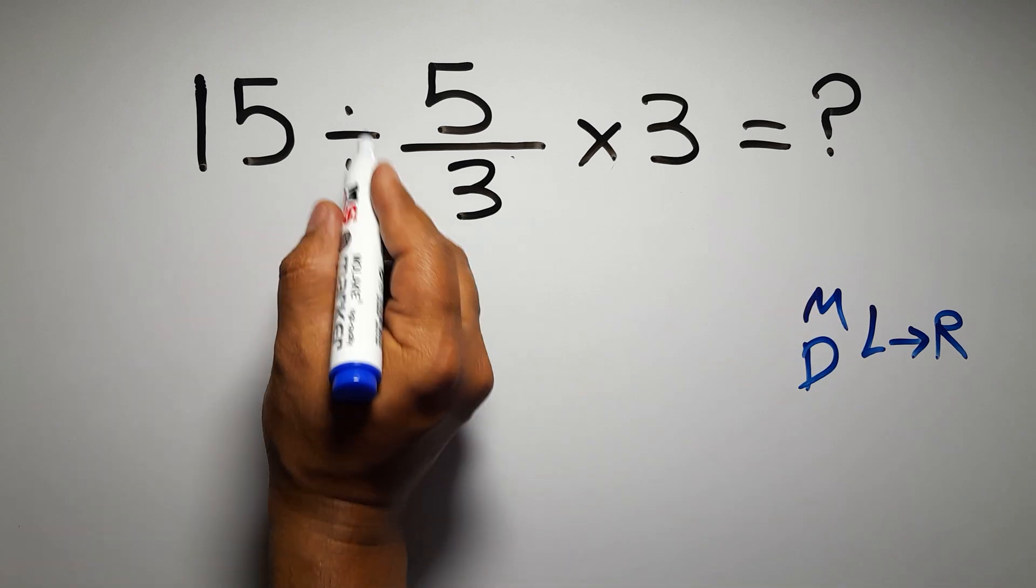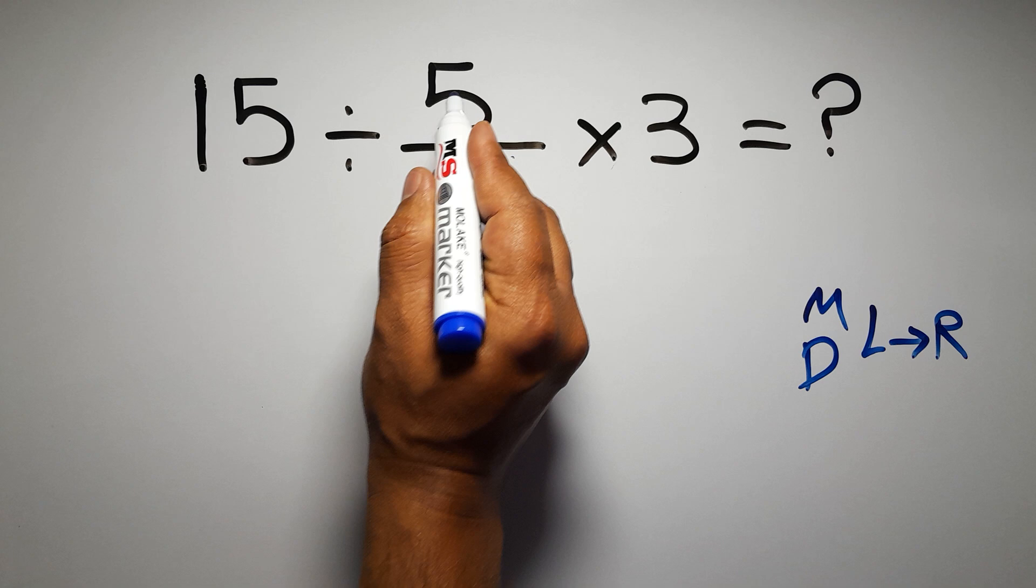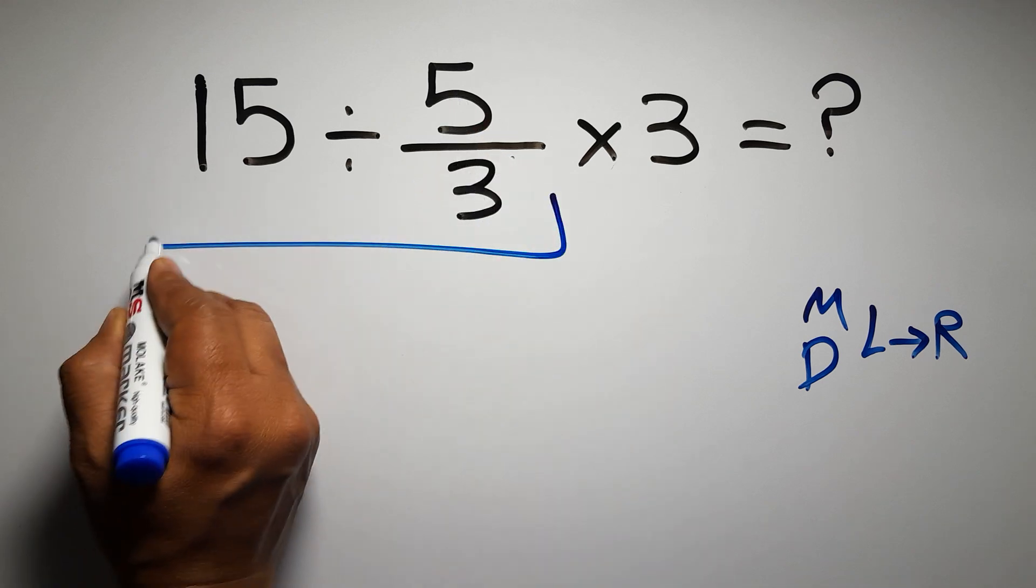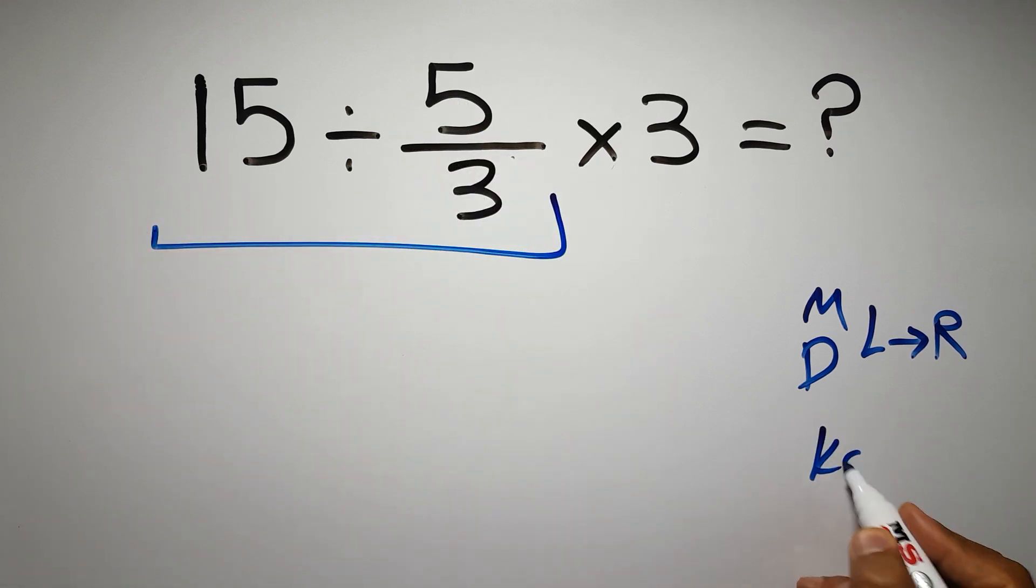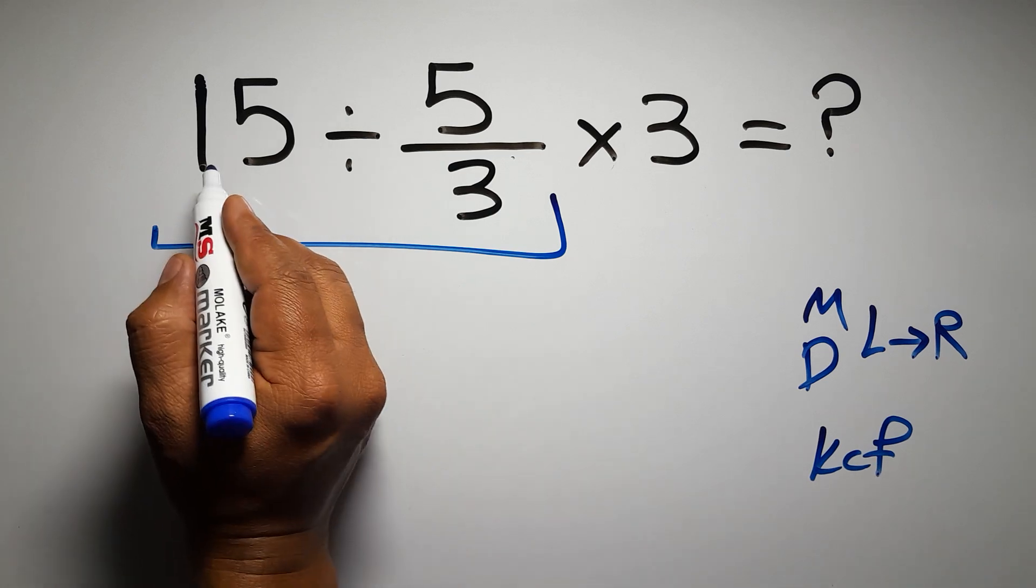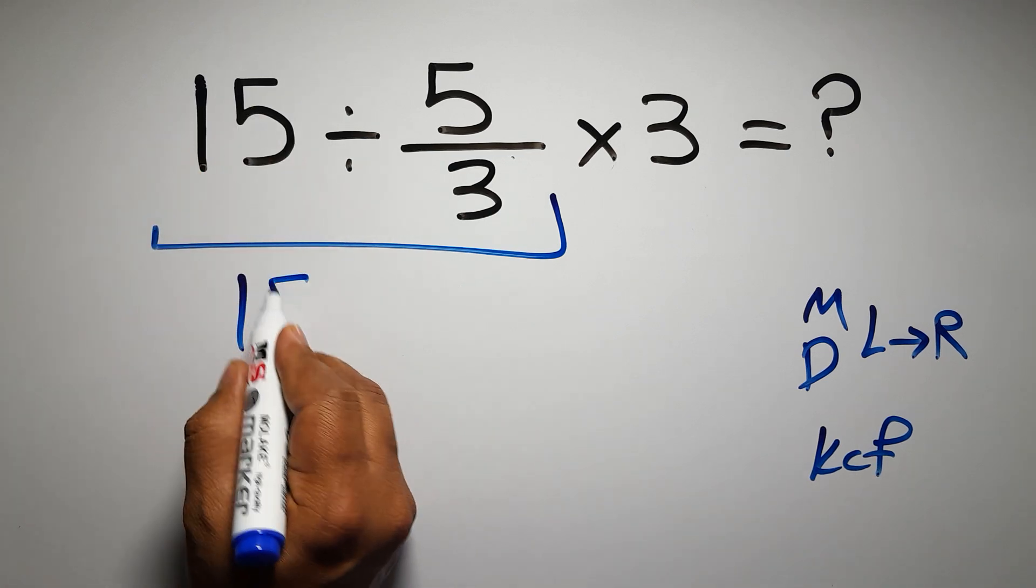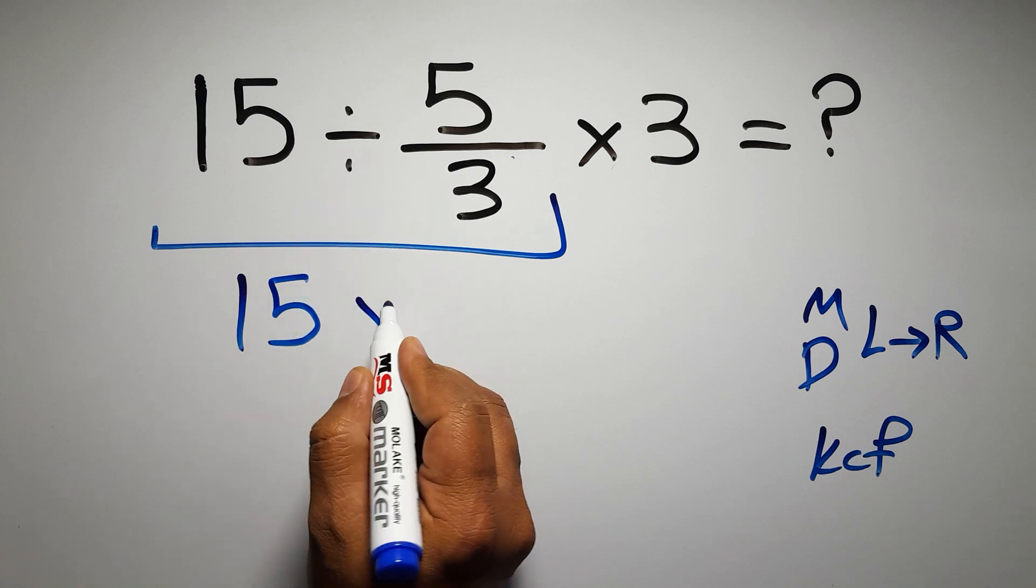So first this division: 15 divided by 5 over 3. According to the KCF rule, K stands for keep, C stands for change, and F stands for flip. We can write: keep the first fraction, change division to multiplication, and flip the second fraction.